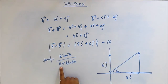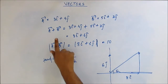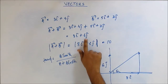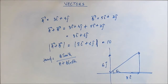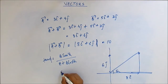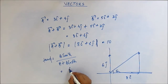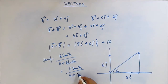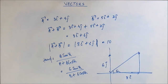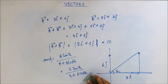tan φ equals B sin θ upon A plus B cos θ — this is the angle φ which the resultant vector makes with vector A. Here, the resultant is the sum of 8i-cap and 6j-cap. So the resultant vector's angle with 8i-cap would be: the magnitude B is 6, so we get 6 sin θ upon 8 plus 6 cos θ. θ is the angle between the two vectors, which is 90°, so sin θ = 1 and cos θ = 0.